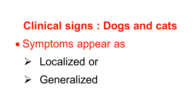First, we see here clinical signs of tetanus in dogs and cats. In dogs and cats, the symptoms appear in two forms: localized form or generalized form. In the localized form, it will show symptoms only at local parts. Most of the wounds are on the legs, so it will show in one leg. While in generalized form, the symptoms are generalized all over the body. So symptoms appear in two forms — local form and generalized form in dogs and cats.